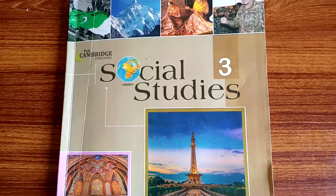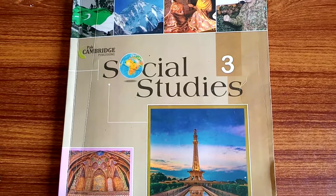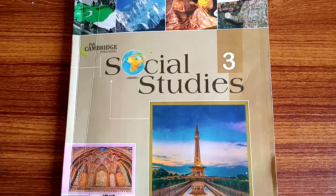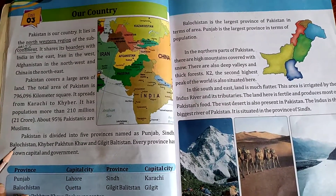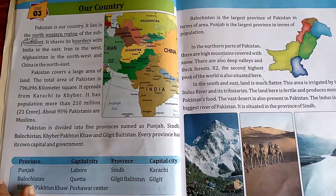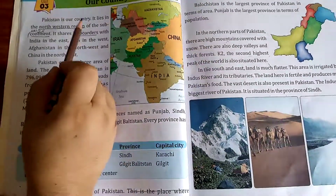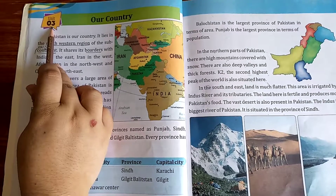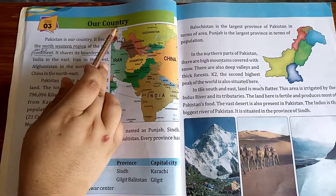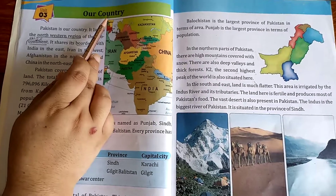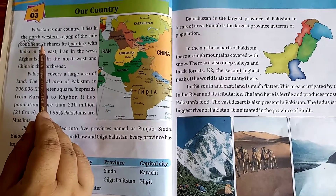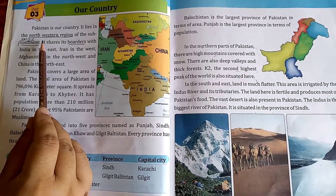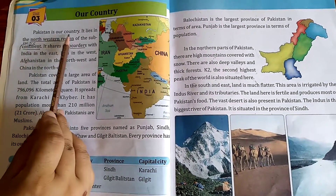Assalamu alaikum students, I hope you will be fine. Today in Grade 3 class we will study Social Studies. Today our unit is 'Our Country.' Please open your book with me. Page number is 10, unit number 3, and the unit name is 'Our Country' — Hamara Mulk. This lesson is about our country and you know very well about that. Our country is Pakistan, so this unit is related to Pakistan.